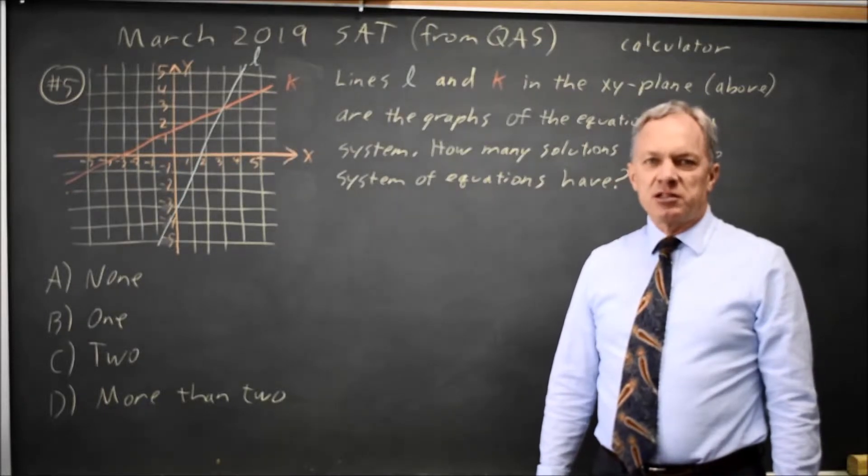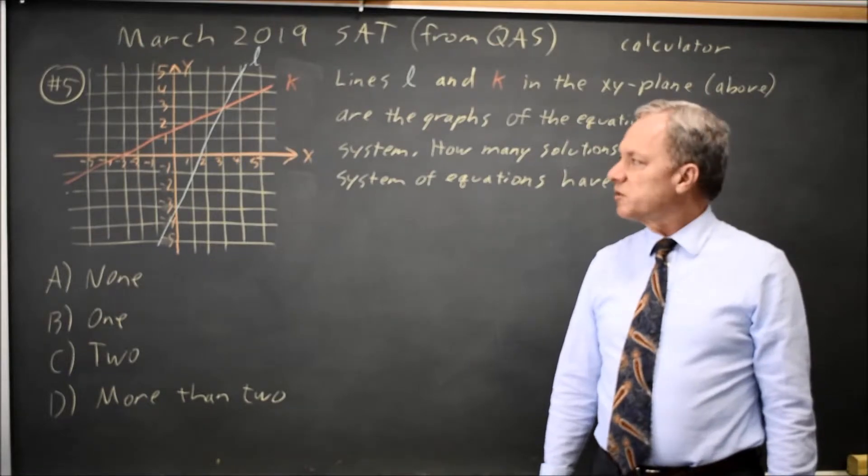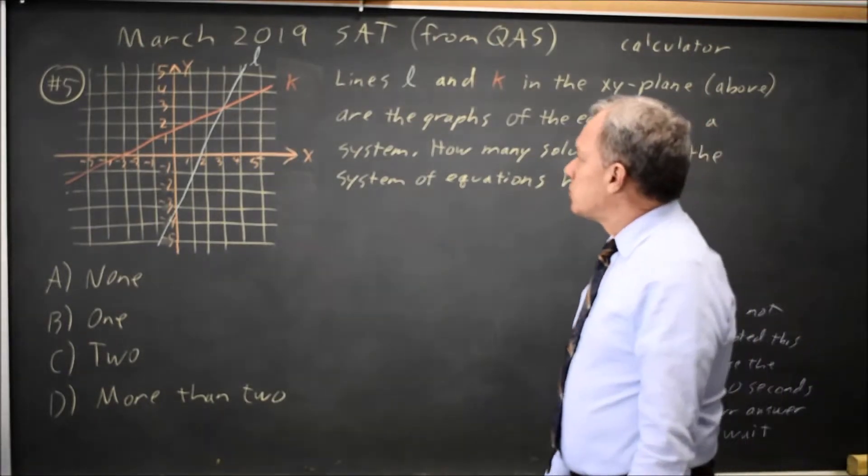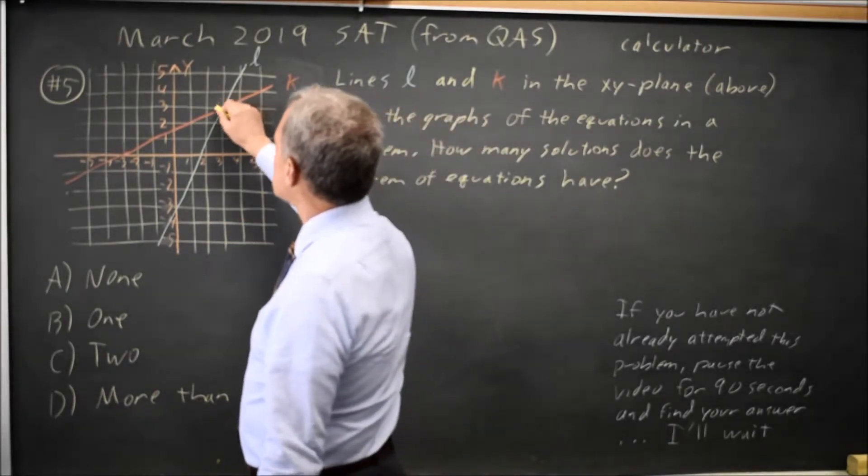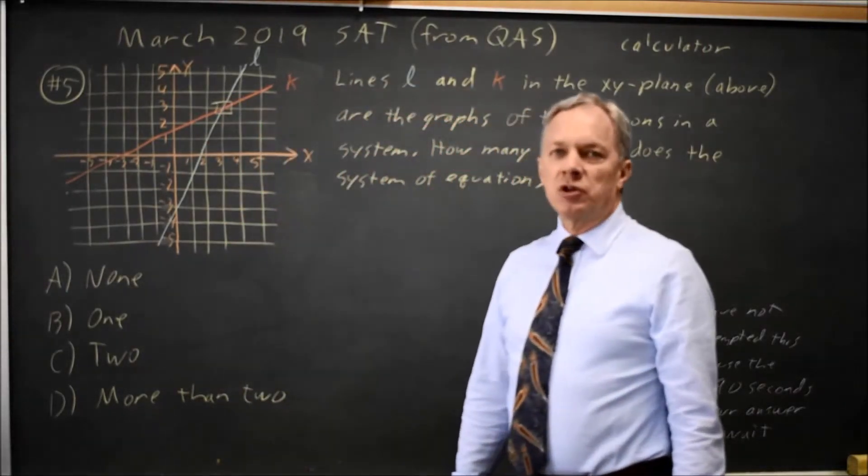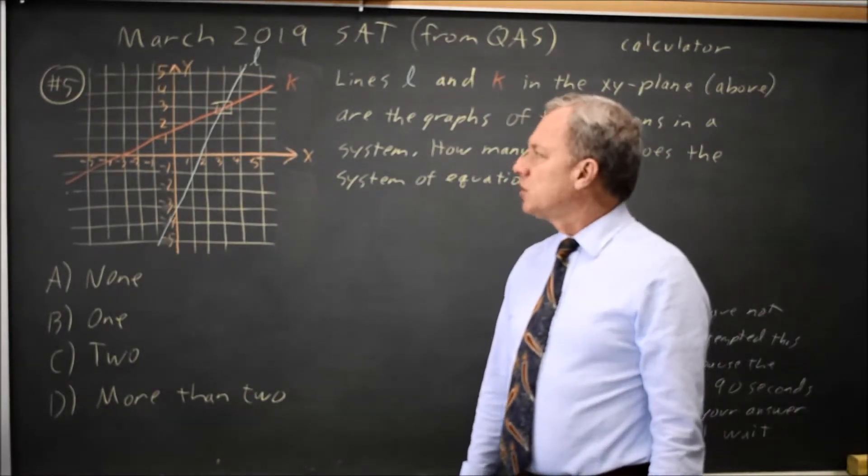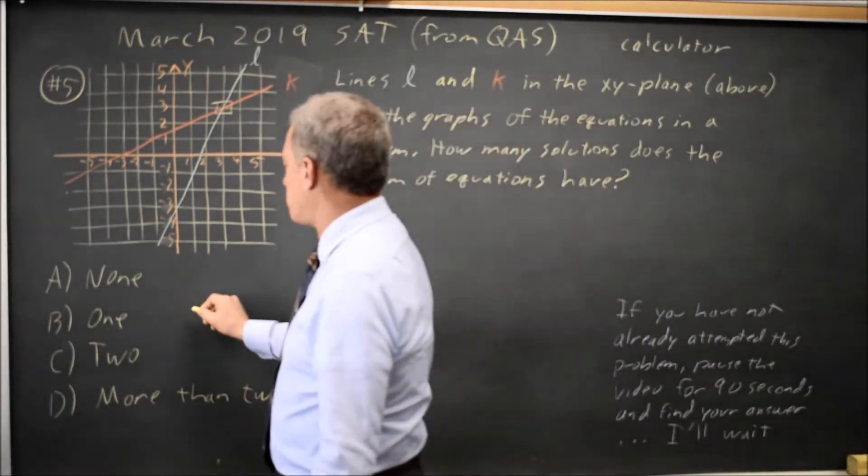Typically College Board will ask you six questions related to systems of equations, and sometimes they'll display them in graphs as they're doing here. The solution of a system of equations is the set of points that are on the graphs of both equations. With two lines in this case, they only meet at one point, so the answer would be one.